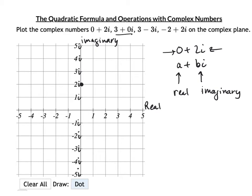For 3 + 0i: go 3 on the real axis, up 0i — just at (3, 0). For 3 - 3i: go 3 real, down 3i. For -2 + 2i: go -2 real, up 2i. This is exactly like graphing ordered pairs — the real part is the x-coordinate, the imaginary part is the y-coordinate.